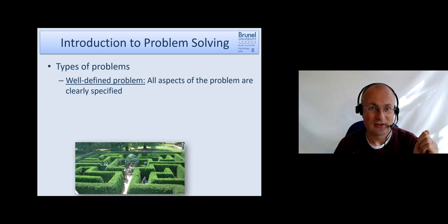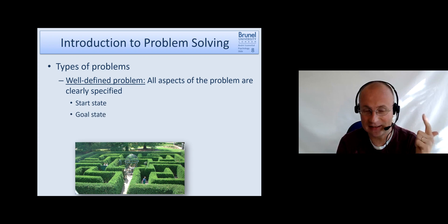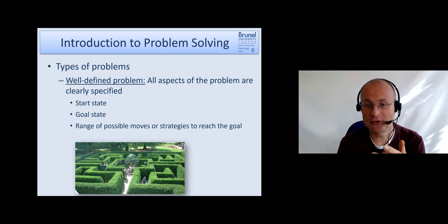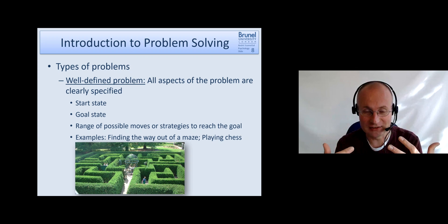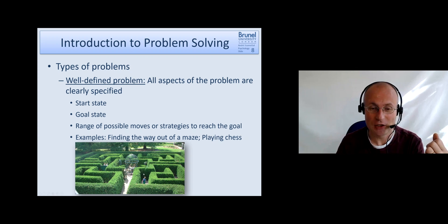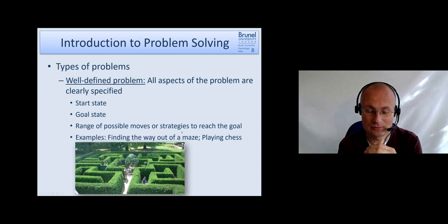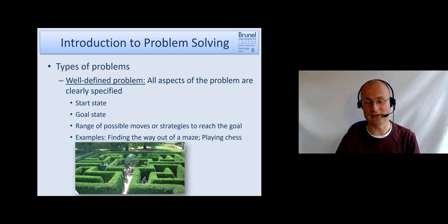Well-defined problems are problems where basically all aspects are clearly specified. We know exactly the start state, the goal state, and what moves or strategies we can use to reach the goal. Typical examples include finding your way out of a maze — you know where you start, your goal is the exit, and your moves are to walk along the path. Another example is playing chess: you have the start position, the goal is checkmate, and the moves and strategies are well defined.